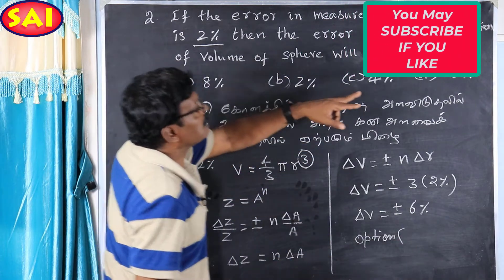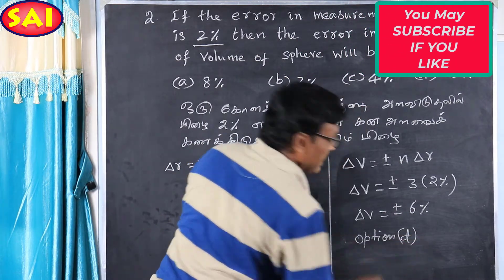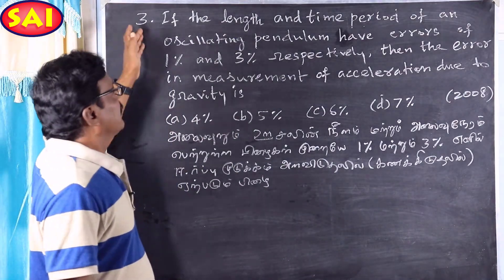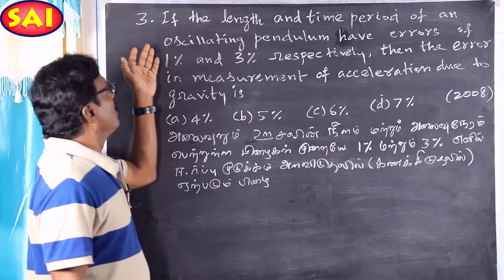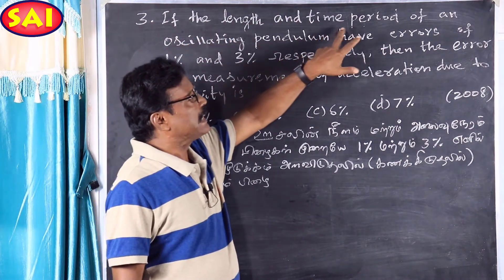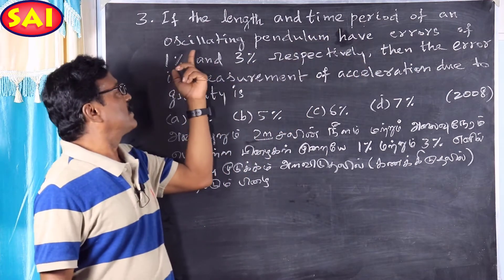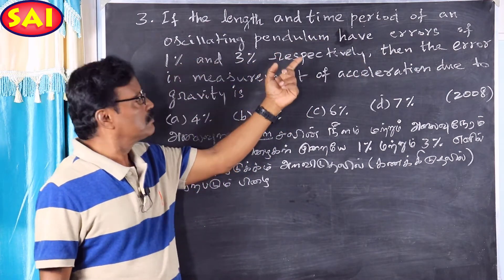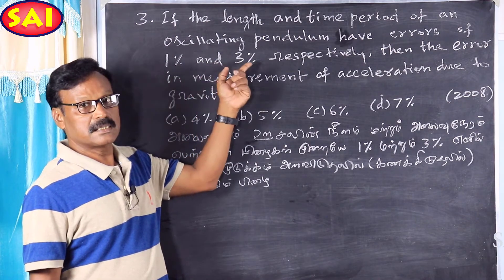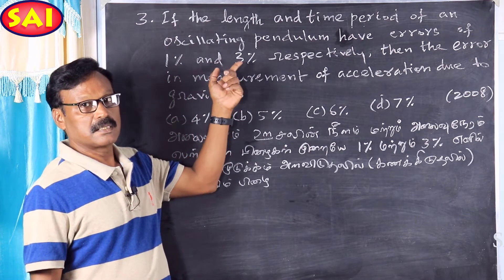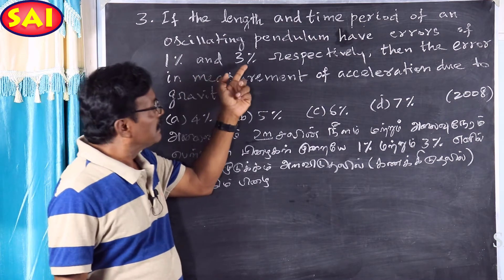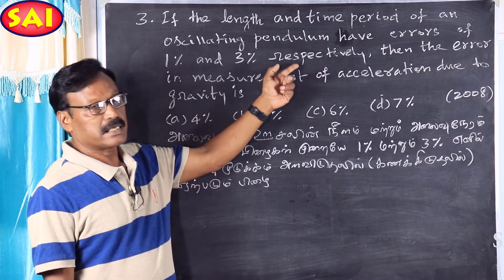Therefore delta V in percentage equals plus or minus 6 percent. The answer is option D, 6 percent. Next problem: if the length and time period of an oscillating pendulum have errors of 1 percent and 3 percent respectively, calculate the error in g.